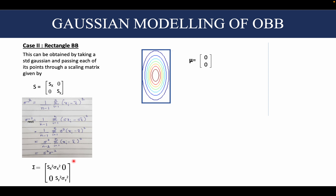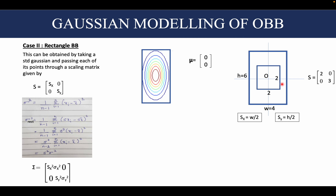To transition from a square bounding box to a rectangular bounding box, we take each point of the standard 2D Gaussian and pass it through a scaling matrix where sx represents scaling along the x-axis and sy represents scaling along the y-axis. The effect of scaling on variance is that the new variance equals the scaling factor squared times the original variance. So for the rectangular case the new covariance matrix has diagonal elements sx² σx² and sy² σy². In a toy example with sx=2 and sy=3: a point (1,0) becomes (2,0) and (0,1) becomes (0,3), so a square bounding box of width 2 becomes width 4 and height 6.